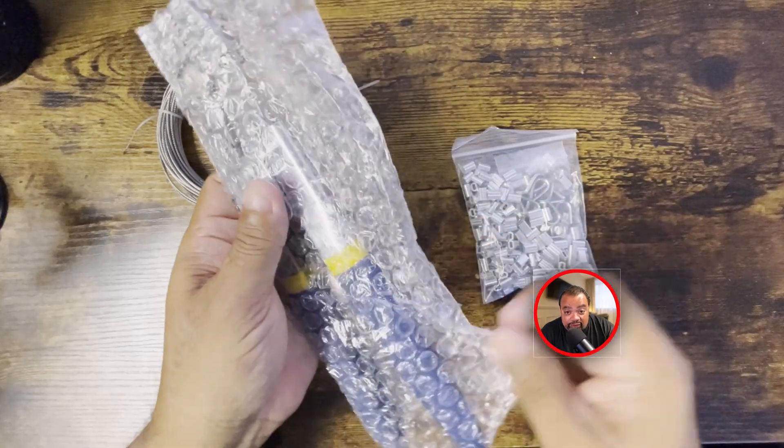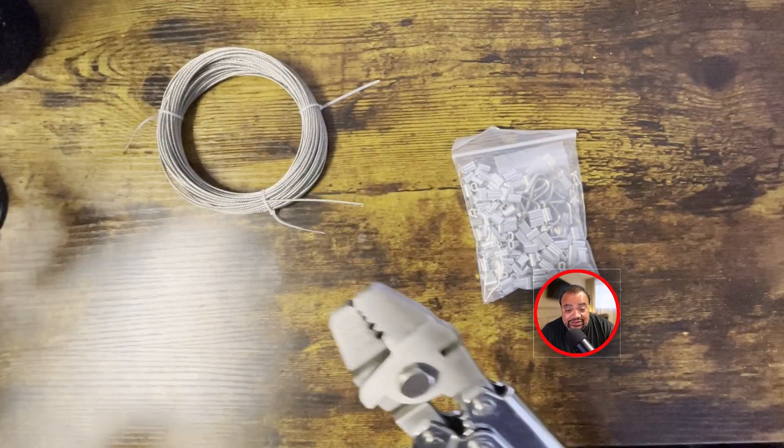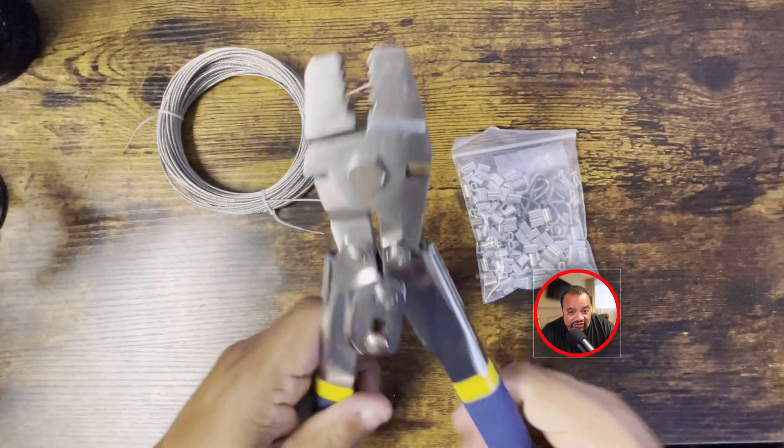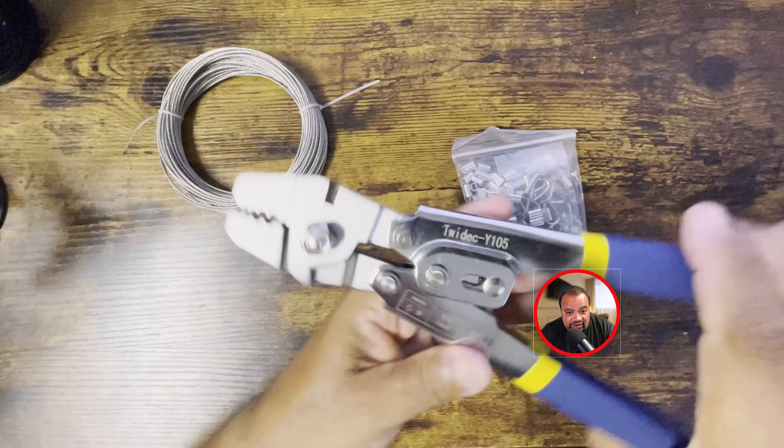You get the crimping tool that's made out of steel and aluminum and this is very well built. I really like the feel of this.